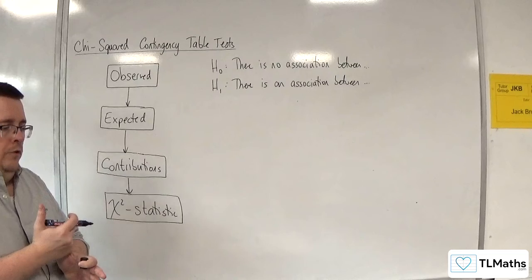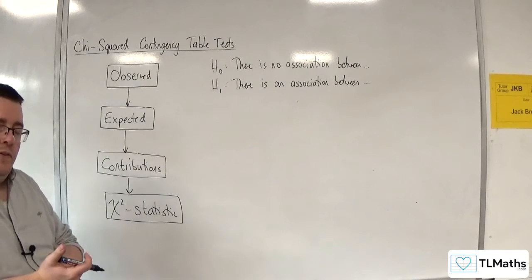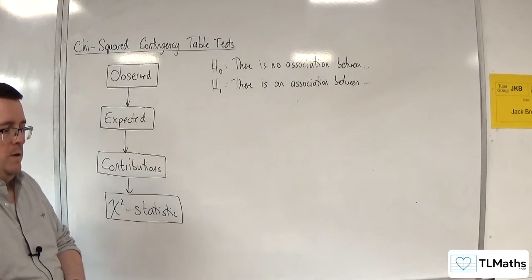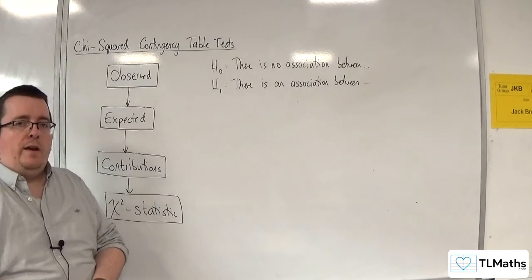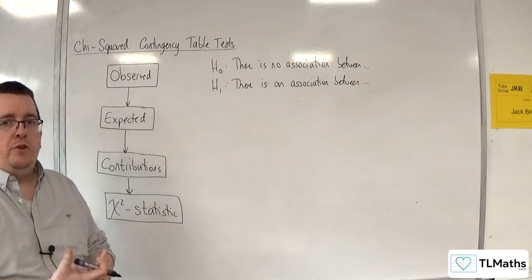Now, for this, you will have the significance level given to you in the question. From the table, you'll be able to calculate nu, the number of degrees of freedom.